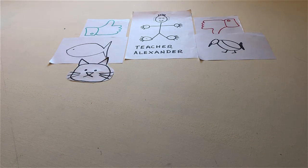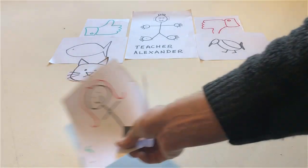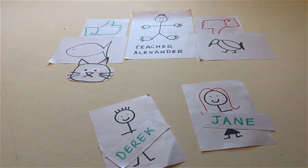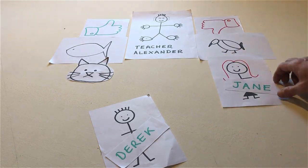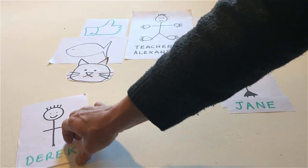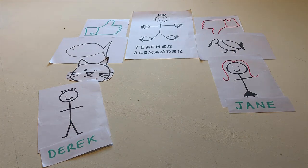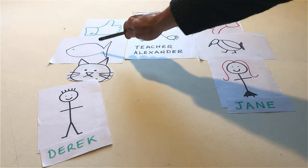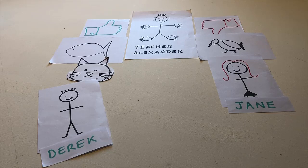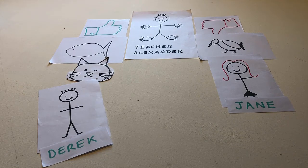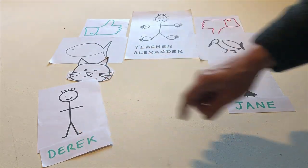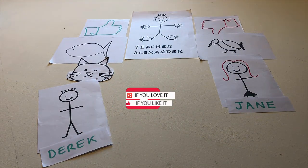Put Jane and Derek on the table. Put Derek below the like symbol. Put Jane and Jake below the don't like symbol. Put the cat below the like symbol that I like. With a pen, touch the animal that I don't like. Now touch a person who I like. And touch a person who I don't like.